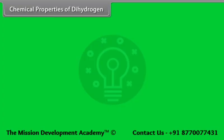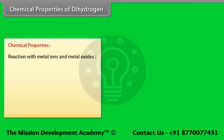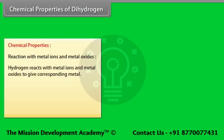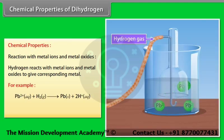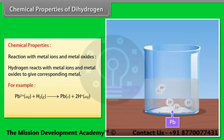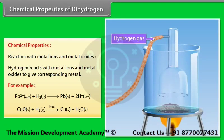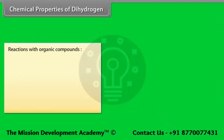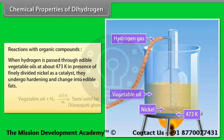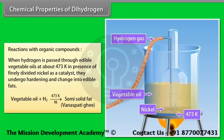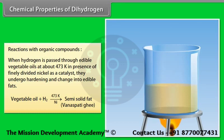Reaction with metal ions and metal oxides: Hydrogen reacts with metal ions and metal oxides to give the corresponding metal. Reactions with organic compounds: When hydrogen is passed through edible vegetable oils at about 473 K in the presence of finely divided nickel as a catalyst, they undergo hardening and change into edible fat.